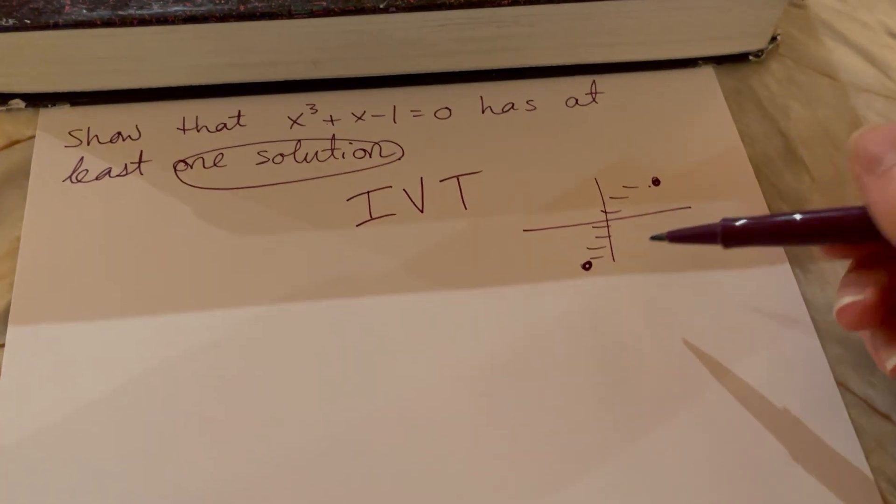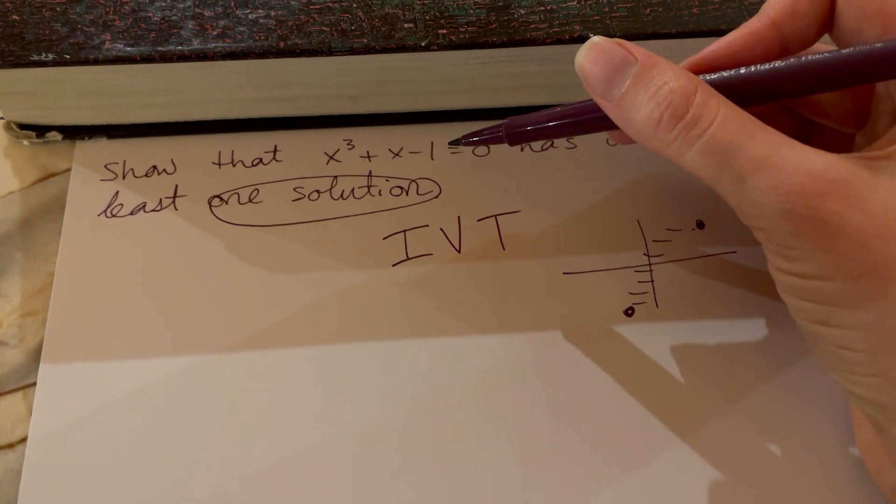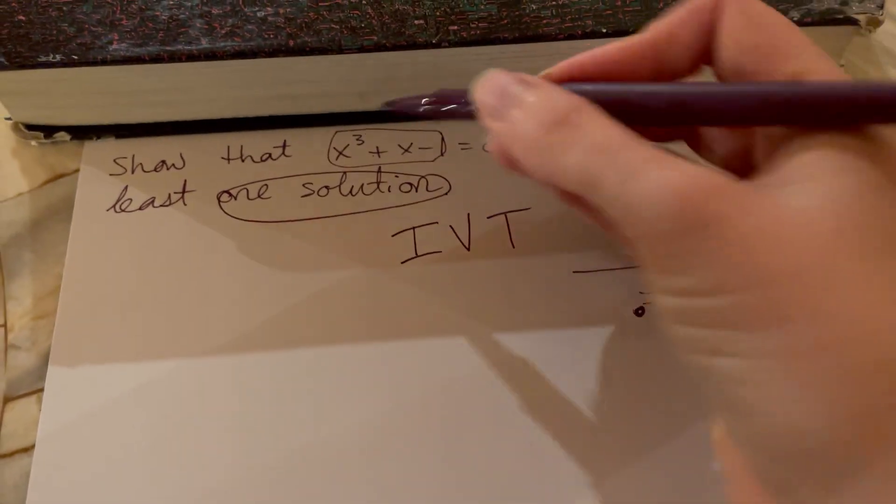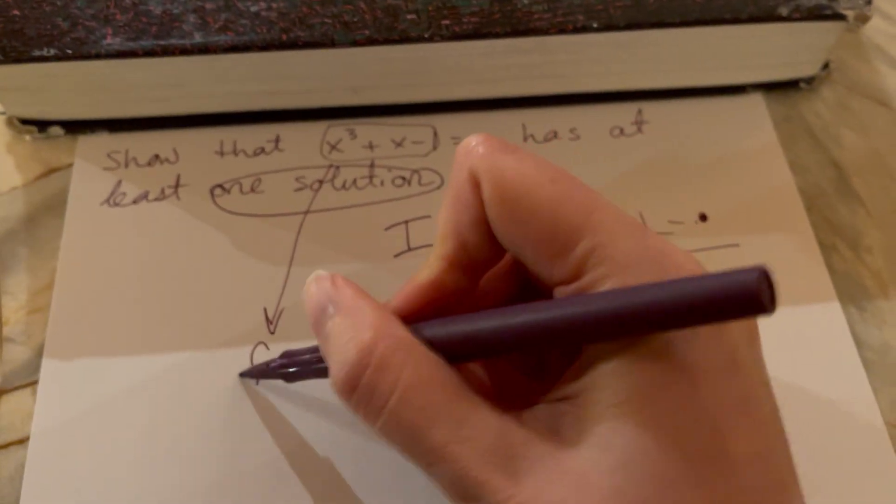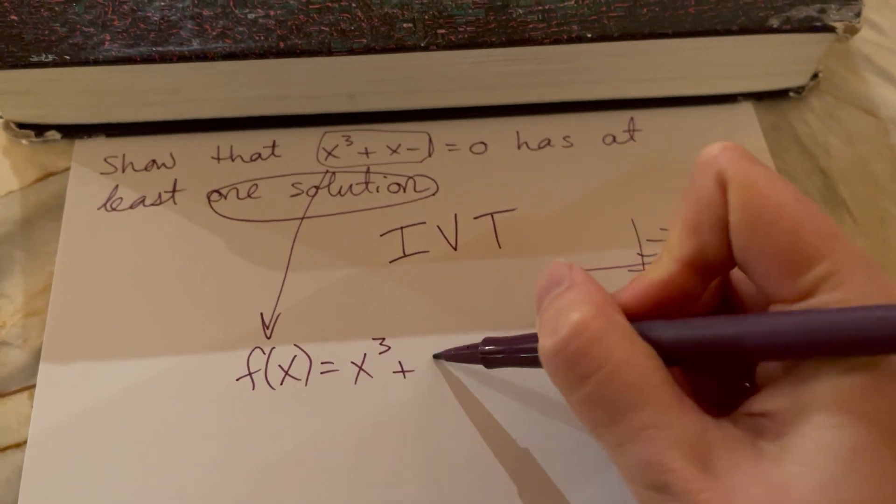That's how it's most often used but there are many variations. So here we can turn this into an IVT problem. You can have this represent the function, so it's as if you're given that f(x) is x cubed plus x minus one.